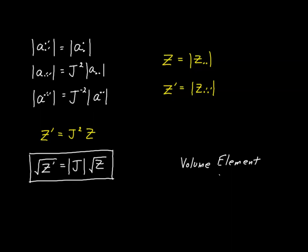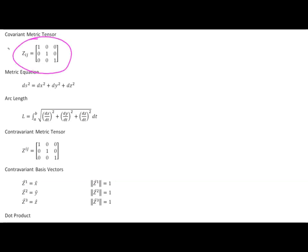Let's take a few minutes to see what this volume element looks like in each of our sample coordinate systems. We'll start with Cartesian coordinates. What we need to do is to find the determinant of our covariant metric tensor. That's easy because it's a diagonal matrix, and the determinant of any diagonal matrix is simply the product of the diagonal elements. So 1 times 1 times 1 gives us the determinant: z is equal simply to 1. And of course that means our volume element, the square root of z, is just 1. The volume element in Cartesian coordinates is 1.